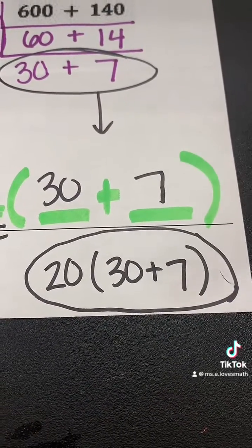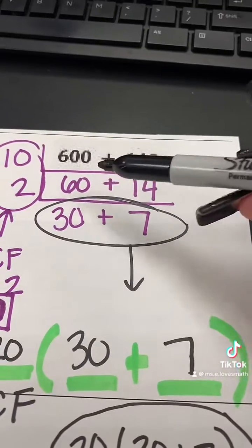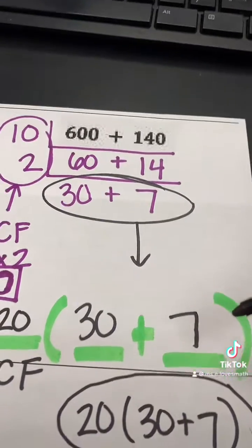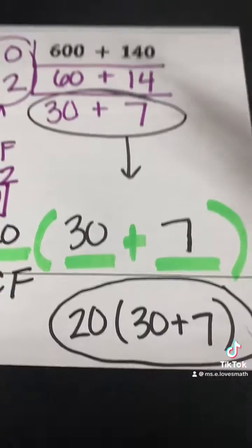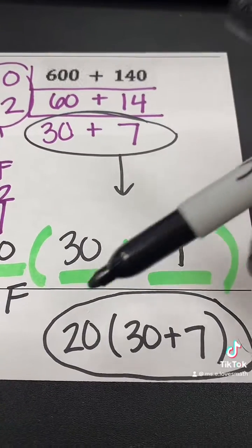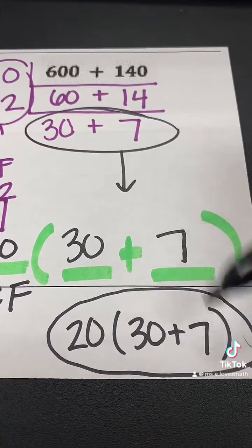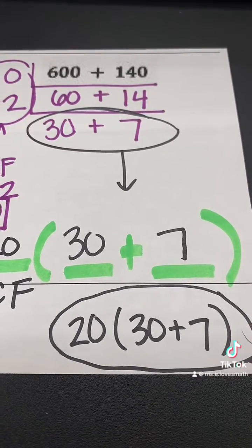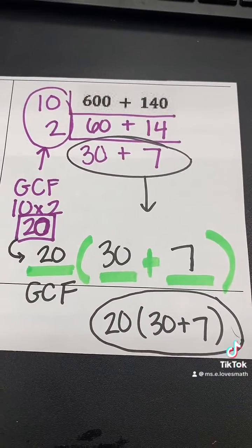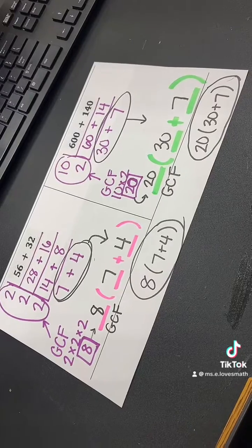This expression is equivalent to 600 plus 140. To check, if we do 20 times 30, we get 600. 20 times 7 is 140.